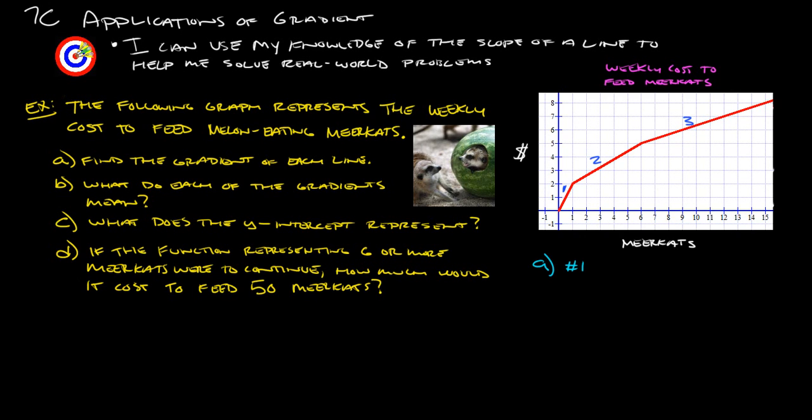Line number one is, I'm going to just pick two points here. So we've got a point there and there, so we go up two over one. Up two over one, so our slope is two. Alright, and that is actually, if we want to get really technical here, that is two dollars per meerkat. Meaning it goes up by two dollars for every meerkat on just this first line.